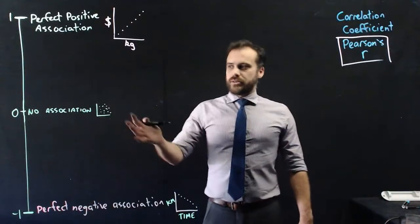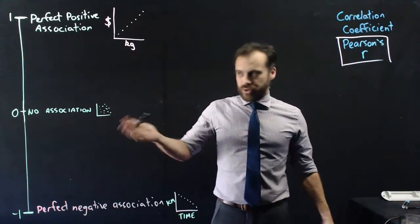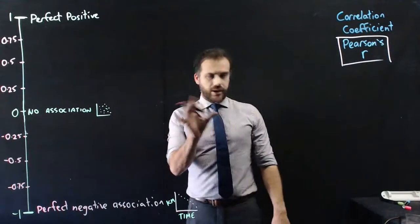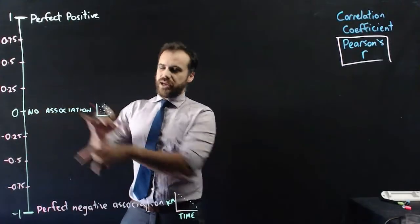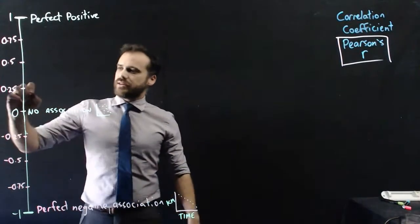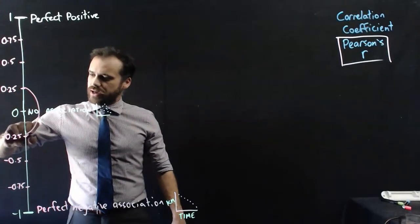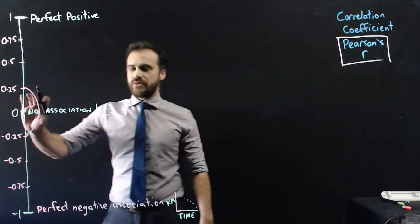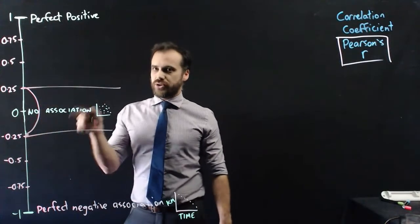And zero is just random dots on a page, no association. I'm not going to give you an example, you know what no association means, random dots. Now it's not just zero that's no association, we can kind of expand that out a little bit and we can say that if your r value is between 0.25 and negative 0.25, anywhere within that bound it's going to be no association.